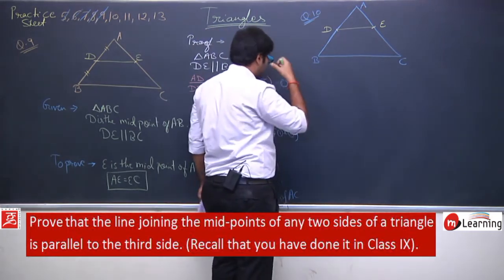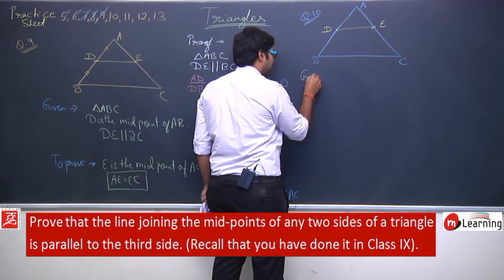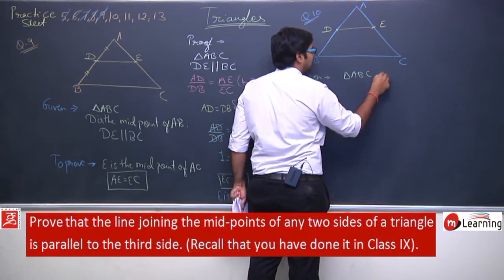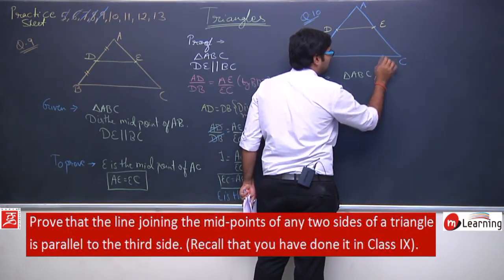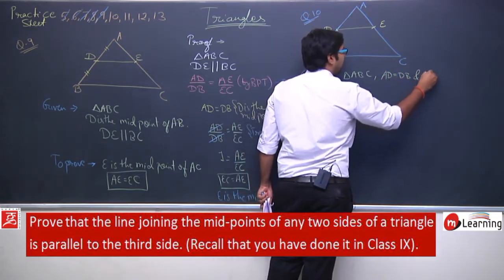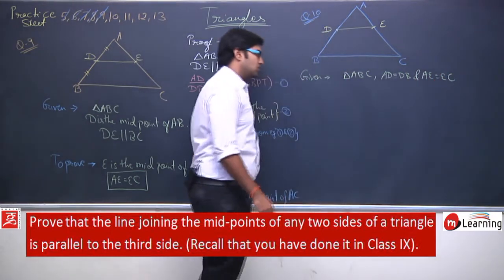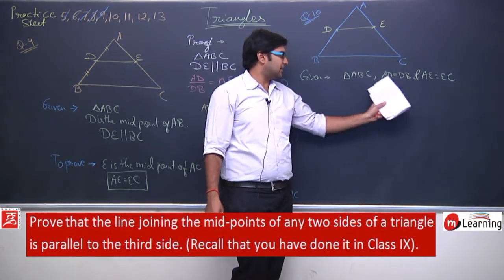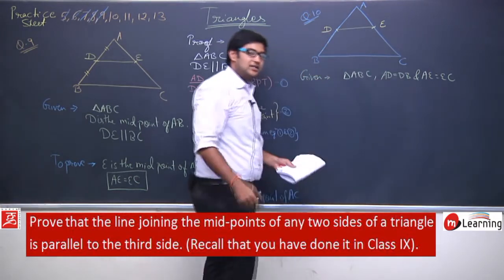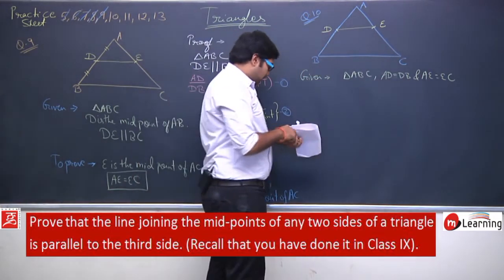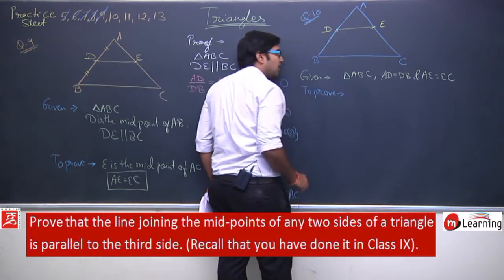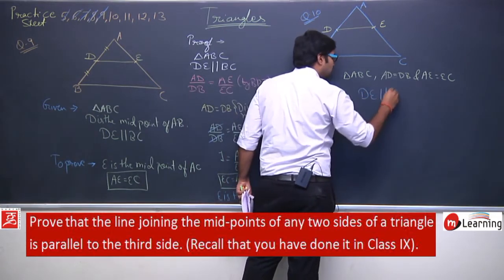Given: In triangle ABC, AD = DB and AE = EC (D and E are midpoints of AB and AC respectively). To prove: DE is parallel to BC. To prove two lines parallel using the converse of BPT, we need to show AD/DB = AE/EC.